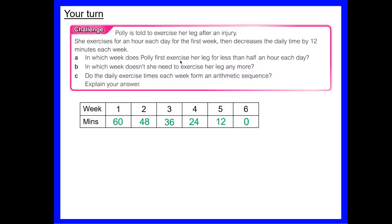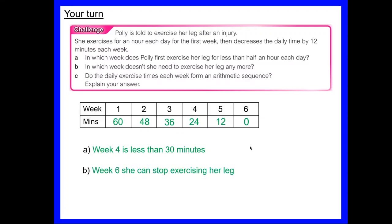Using the table to answer: half an hour is 30 minutes — the first value below 30 is 24 minutes in week 4, so she first exercises for less than half an hour in week 4. She doesn't need to exercise at all from week 6, when time reaches zero. Do these form an arithmetic sequence? From 60 to 48 to 36 to 24 to 12 to 0 — subtracting 12 each time — yes, it goes down by 12 each time, so it's arithmetic.